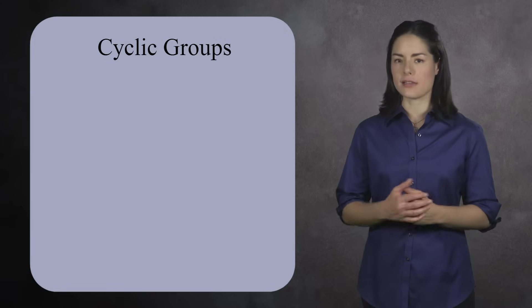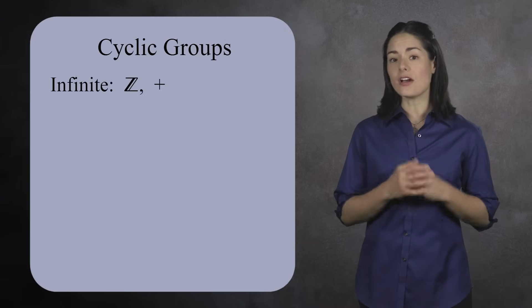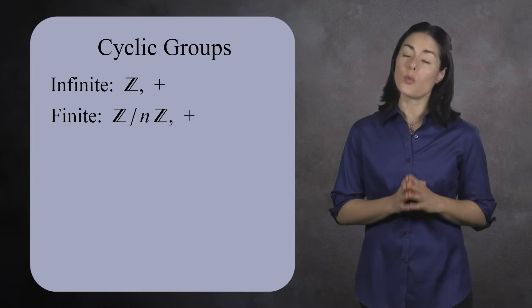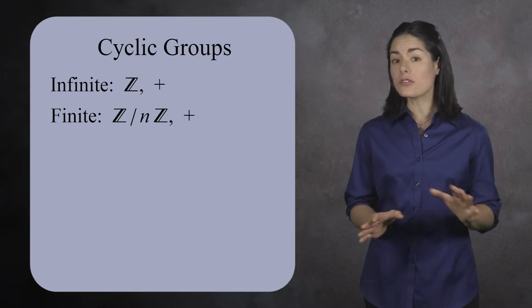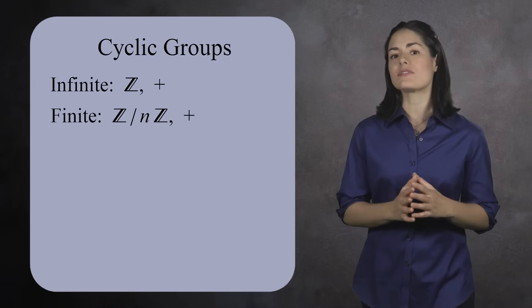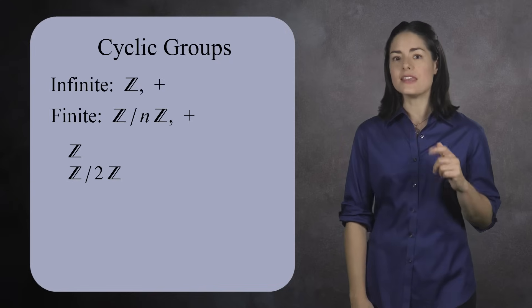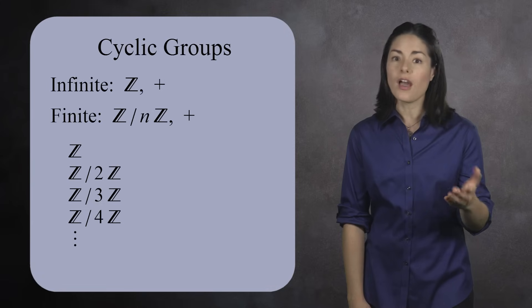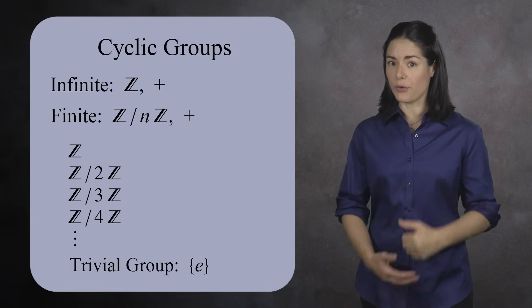We've now seen two types of cyclic groups: the integers Z under addition, which is infinite, and the integers mod n under addition, which is finite. Are there other cyclic groups? No. This is it. The complete collection of cyclic groups: the integers, the integers mod 2, the integers mod 3, the integers mod 4, and so forth. Oh, and don't forget the trivial group.